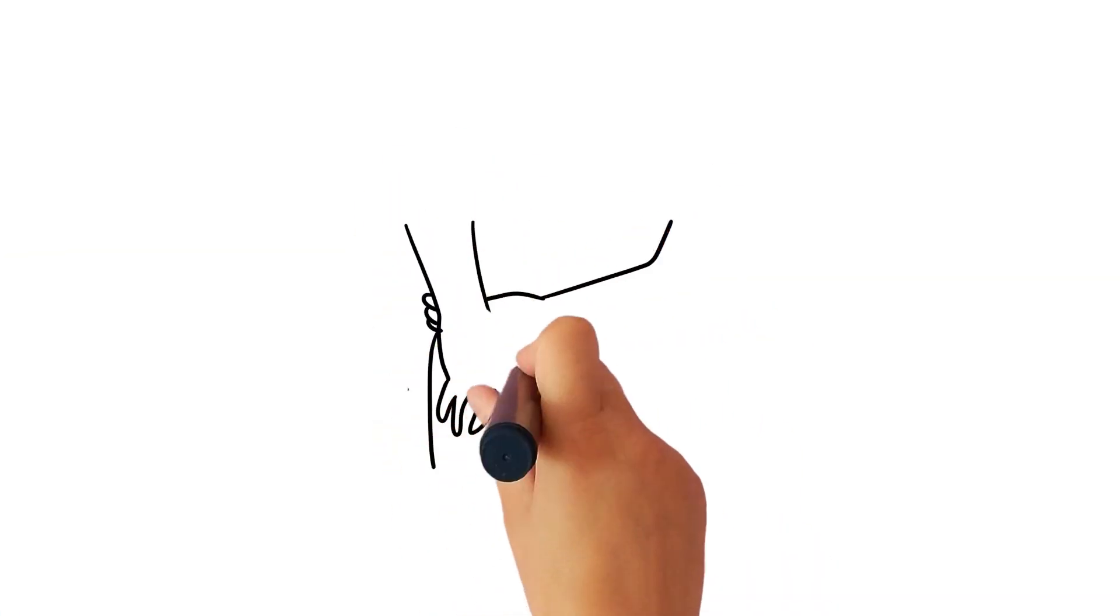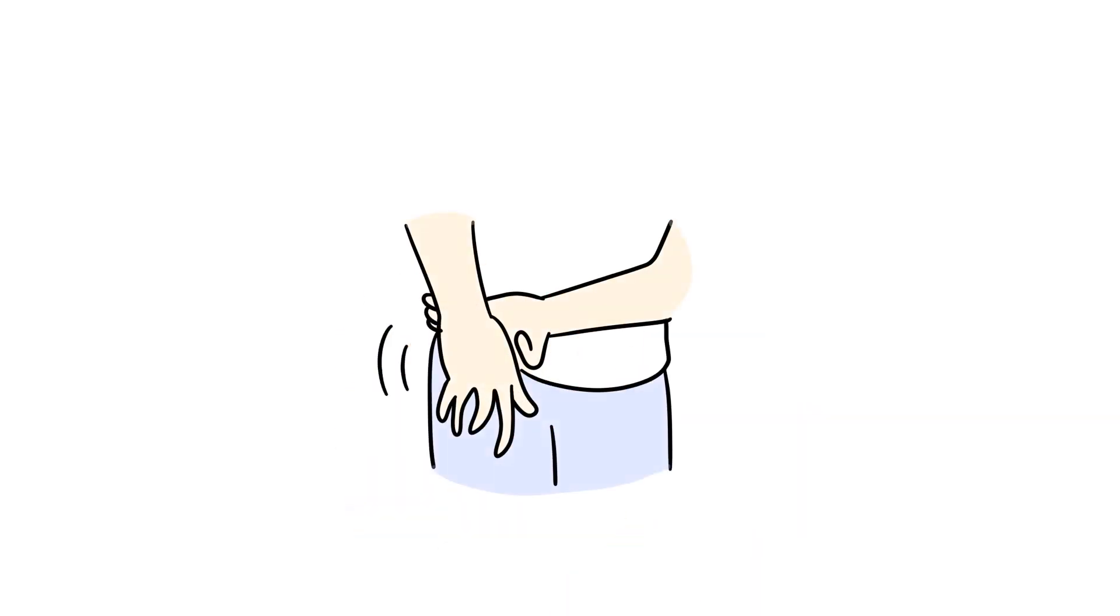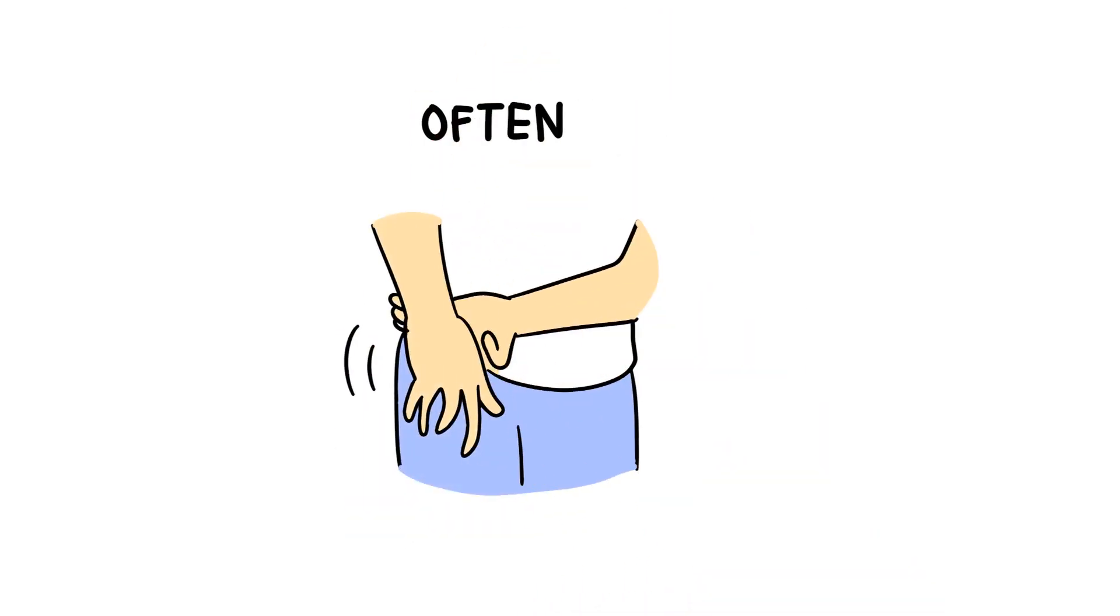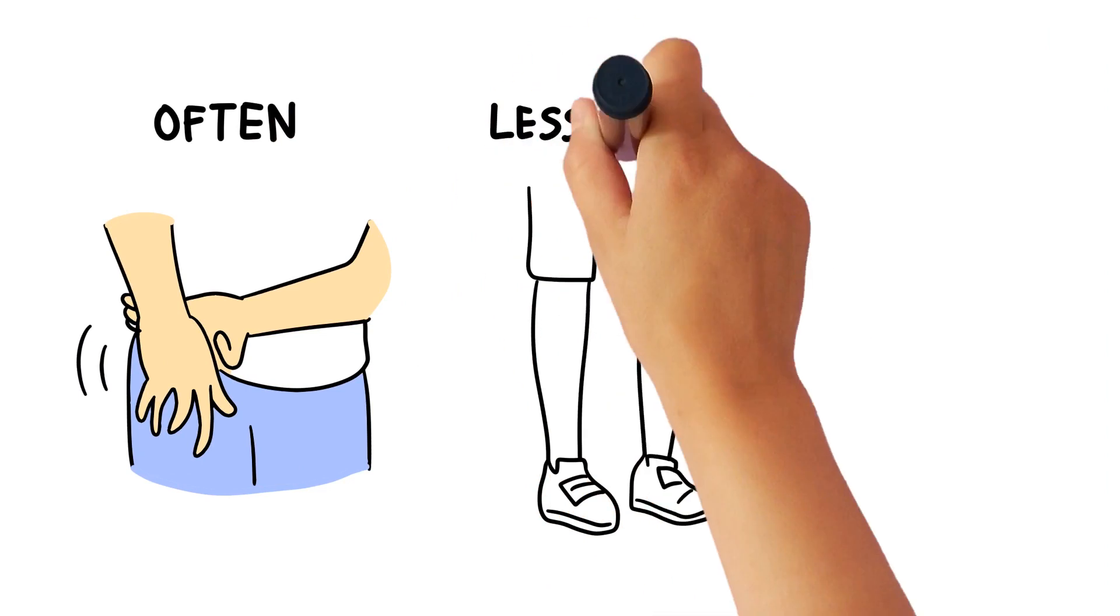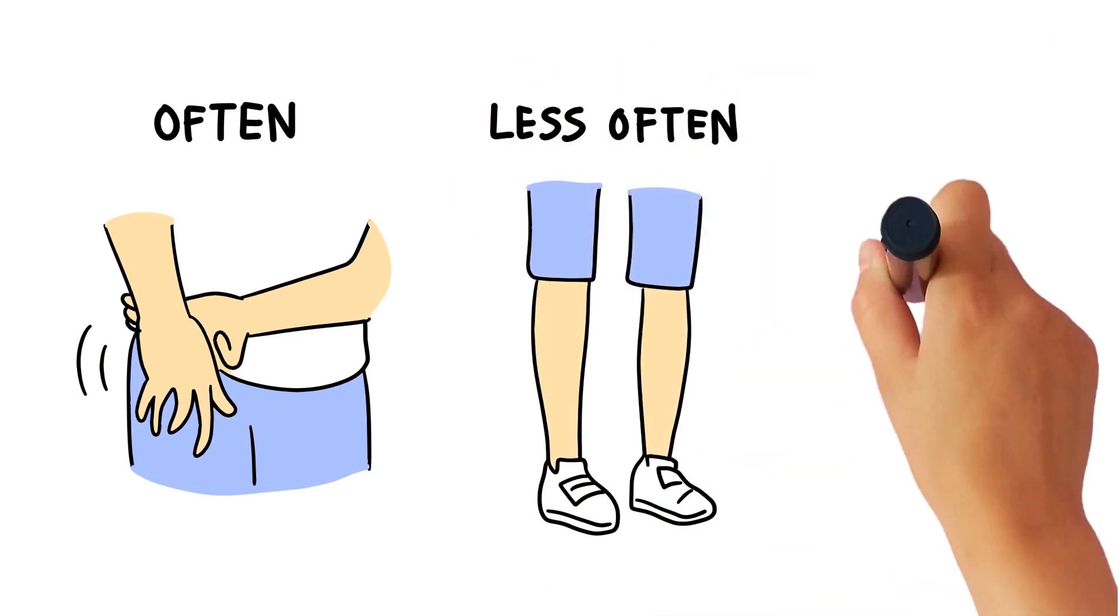Patients with MMN commonly have muscle weakness and loss of muscle in the hands and wrist region. Legs are less often affected. Patients do not have numbness or tingling.